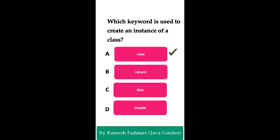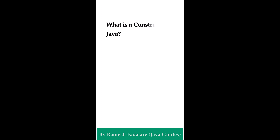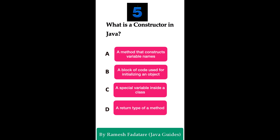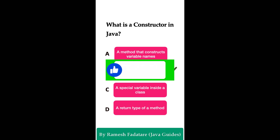In Java we use the new keyword to create an object of a class — it is used to instantiate an object. What is a constructor in Java? Option A: a method that constructs variable names. Option B: a block of code used for initializing an object. Option C: a special variable inside a class. Option D: a return type of a method. The correct answer is option B. A constructor is a special method used to initialize objects. When you create an instance of a class, the constructor is called. A constructor has the same name as the class.